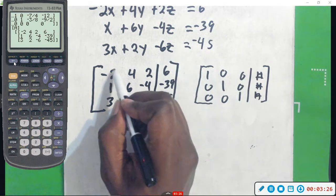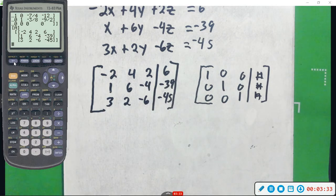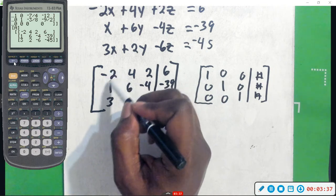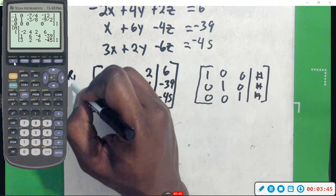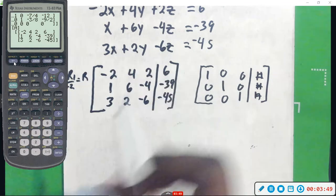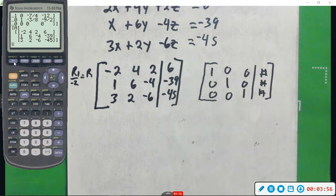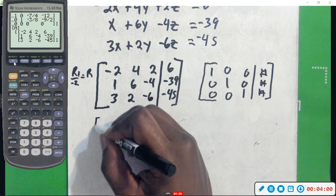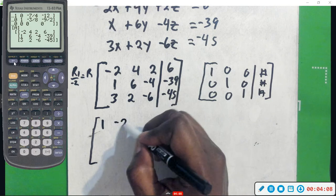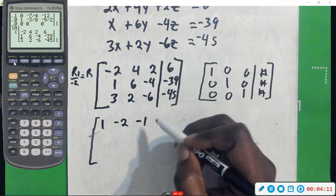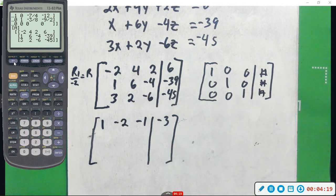First thing I'm going to do is get this number right here to be a 1 and then zero these out, and then do the same thing going down the table. So in order to make this be a 1, I'm going to divide by negative 2 — this whole row. So row 1 divided by negative 2 is going to be my new row 1. Dividing all of this by negative 2 will give me 1, negative 2 divided by negative 2 gives negative 1, divide by negative 2 gives negative 3. So I'm only changing that one row; the other rows are the same for right now.